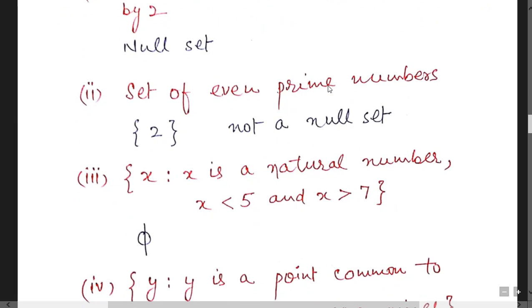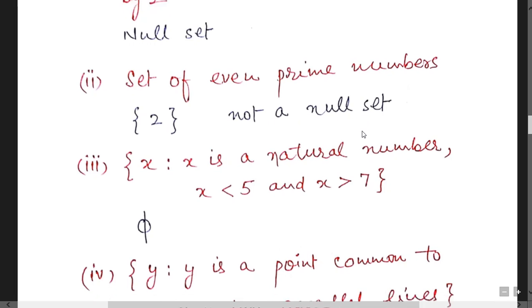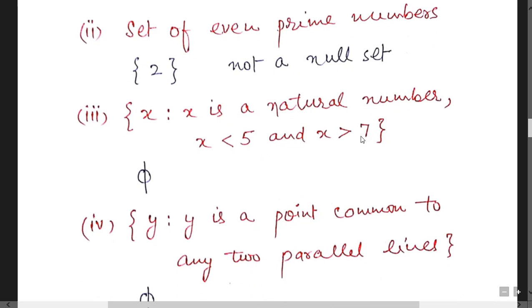Set of even prime numbers, that is 2. It is not a null set. Number less than 5 and greater than 7. There is no such type of number which is less than 5 and greater than 7. That is why answer is phi.